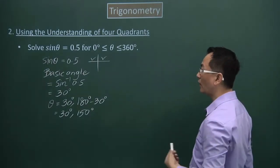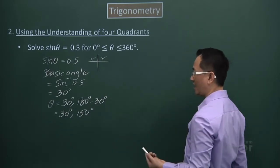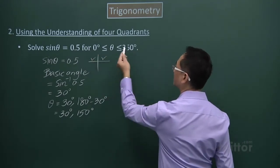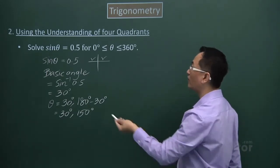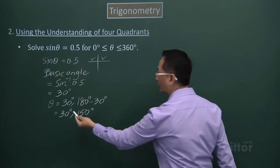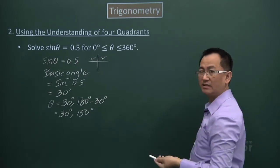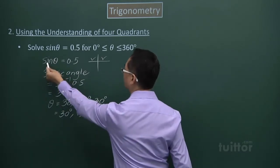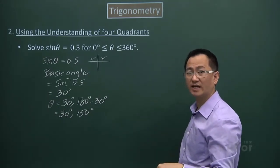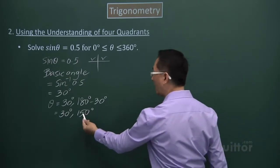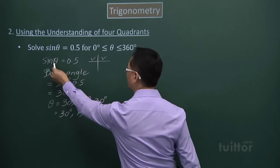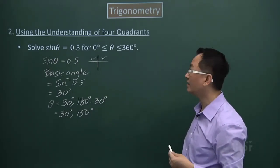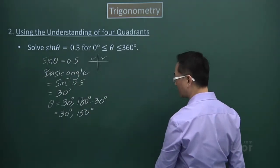We can do a quick check to see if these two angles are correct. First, confirm that 30° and 150° are within the range of 0° to 360° — yes, they are. Second, plug each back in: sine 30° = 0.5 ✓, and sine 150° = 0.5 ✓. So these are the two verified answers.